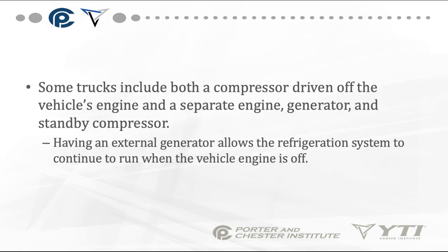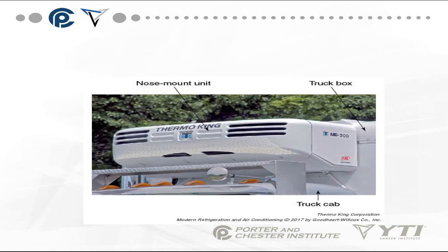Some trucks include both a compressor driven off the vehicle's engine and a separate engine generator and standby compressor. Having an external generator allows the refrigeration system to continue to run even when the vehicle is off. Thermo-King is one of the most frequent brands seen — this is a nose-mounted unit with ventilation slots for the condenser, the truck box behind it, and the truck cab usually under it.